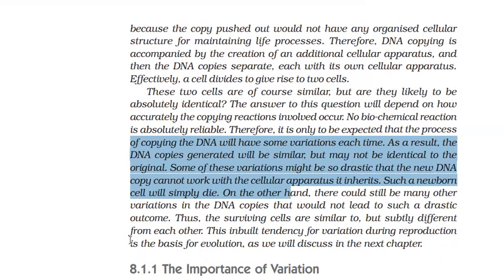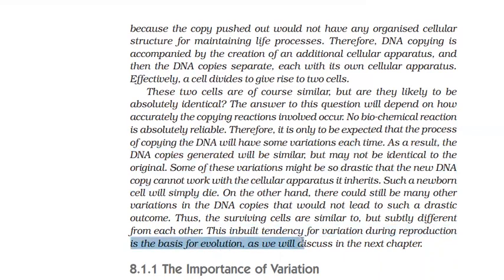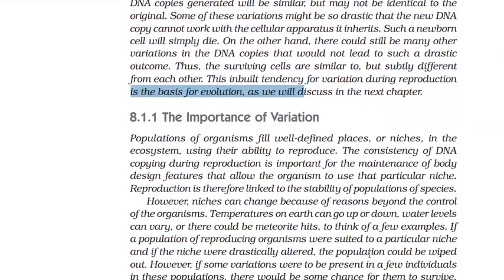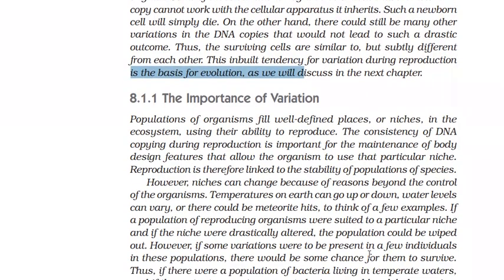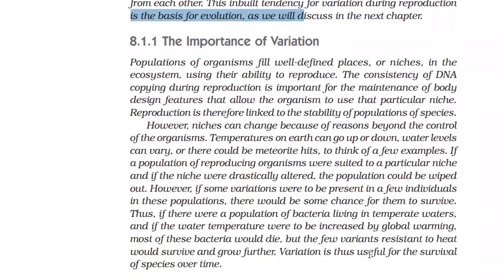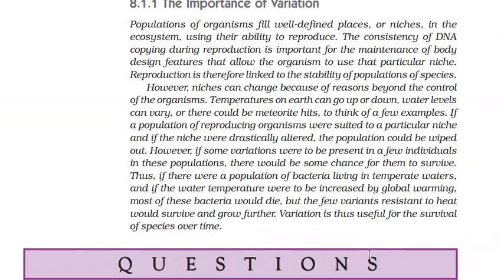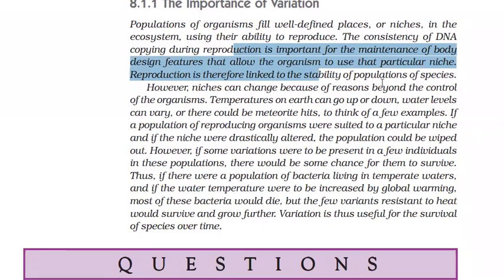This inbuilt tendency for variation during reproduction is the basis of evolution. We have seen variations due to errors of DNA copying. The consistency of DNA copying during reproduction is important for maintenance of body design — if the body design is the same, the organism can survive in a particular habitat. Reproduction is therefore linked to the stability of populations of species.